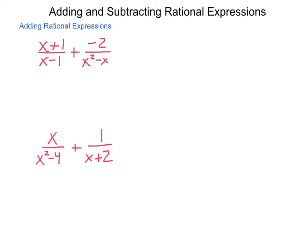If I have x plus 1 divided by x minus 1, plus negative 2 divided by x squared minus 1, I need to find the lowest common denominator. There's nothing I can do with the first denominator, but the second one I can factor. In both terms, I can factor out an x, giving me x minus 1 as the resultant.